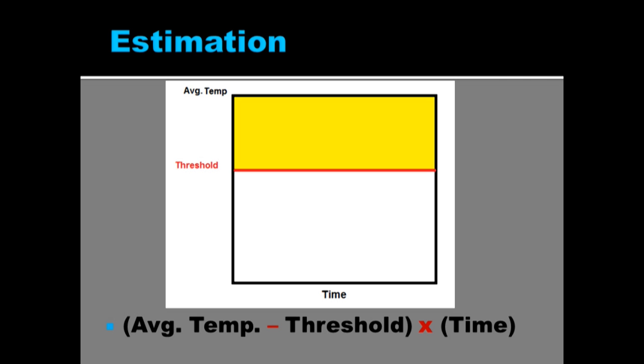We subtract out the threshold value that we know for bugs that's given to us in most cases. And then we multiply that by the time to calculate the area above that curve. So we can do this for days. We can do this for hours. Whatever time we need to do it for, we're just trying to calculate the area of a box. It's as simple as that.